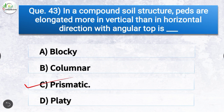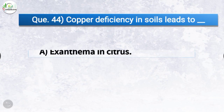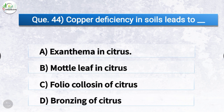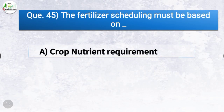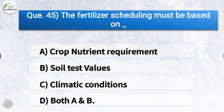Question number forty-four: copper deficiency in soils leads to? The correct answer is option A, exanthema in citrus. Copper deficiency in soil leads to exanthema in citrus. Question number forty-five: fertilizer scheduling must be based on? The correct answer is option D, both A and B — which is crop nutrient requirement and soil test value.